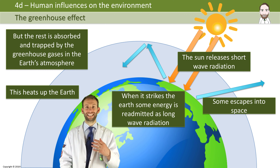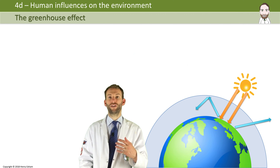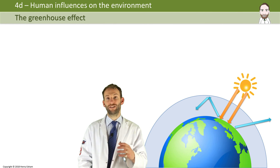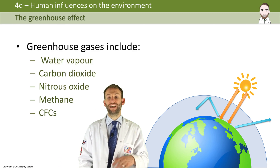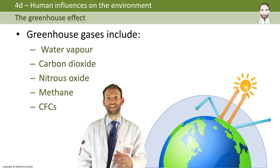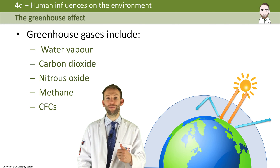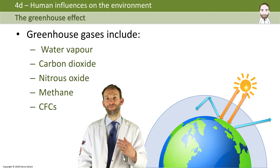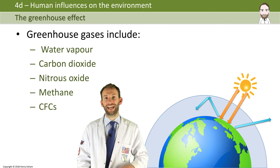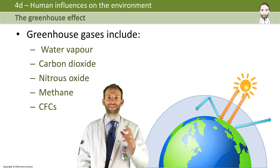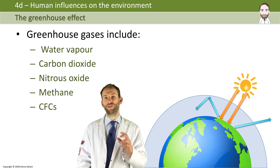The problem is that human activity has drastically increased the quantity of greenhouse gases in our atmosphere, and it's now trapping way too much heat, causing the planet to get way too hot. These greenhouse gases include water vapor, carbon dioxide, nitrous oxide, methane, and CFCs.